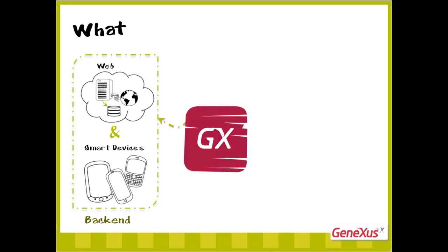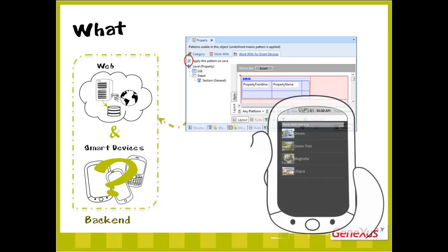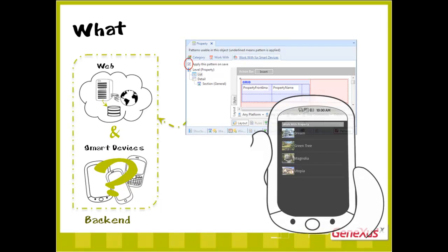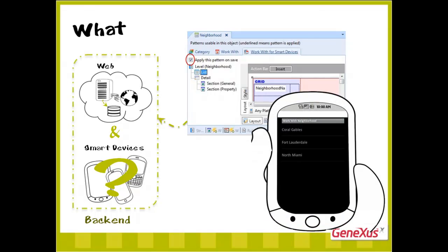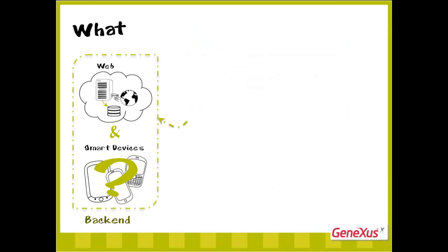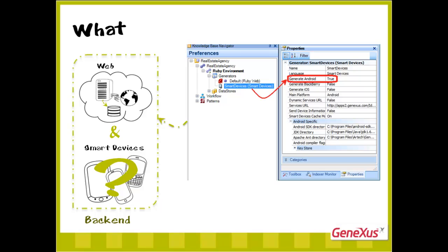To implement the smart device section, we will apply the work-with pattern for smart devices to the property transaction, to the neighborhood transaction, and create a dashboard object as an entry point. From the start, we have decided to generate only an Android, the default platform.